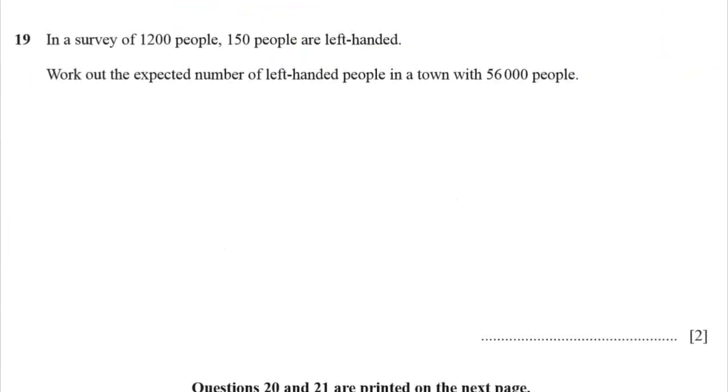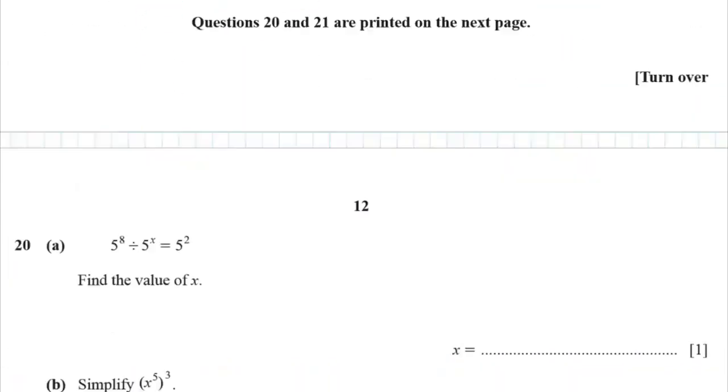Question 19. In a survey of 1,200 people, 150 were left-handed. Work out the expected number in a group of 5,600 people. So let's go for a ratio. There's 150 people out of 1,200. That's the fraction or a ratio of people. And we're going to multiply that by 5,600. And that seems like a great plan. Let's see how big it gets. It says 7,000 on the dot. We're going to take that.